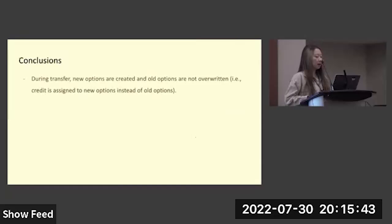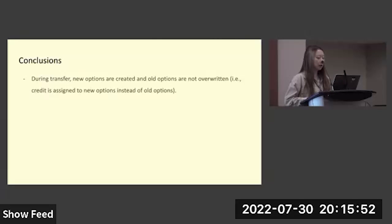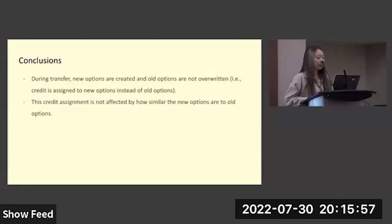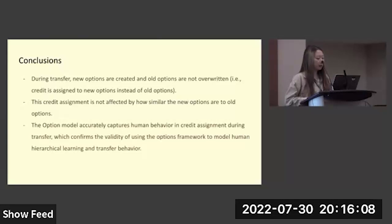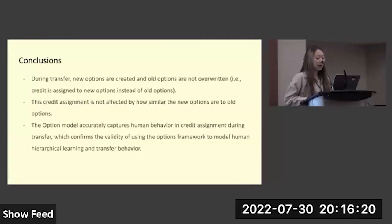In conclusion, for our credit assignment question: during transfer, new options are created and old options are not overwritten — credit is assigned to new options rather than old ones. This credit assignment is not affected by how similar the new options are to old options, as we observed no performance differences between our two groups. Finally, the option model accurately captured human behavior and credit assignment during transfer, adding to the evidence that the options framework is a valid framework to model human hierarchical learning and transfer behavior.